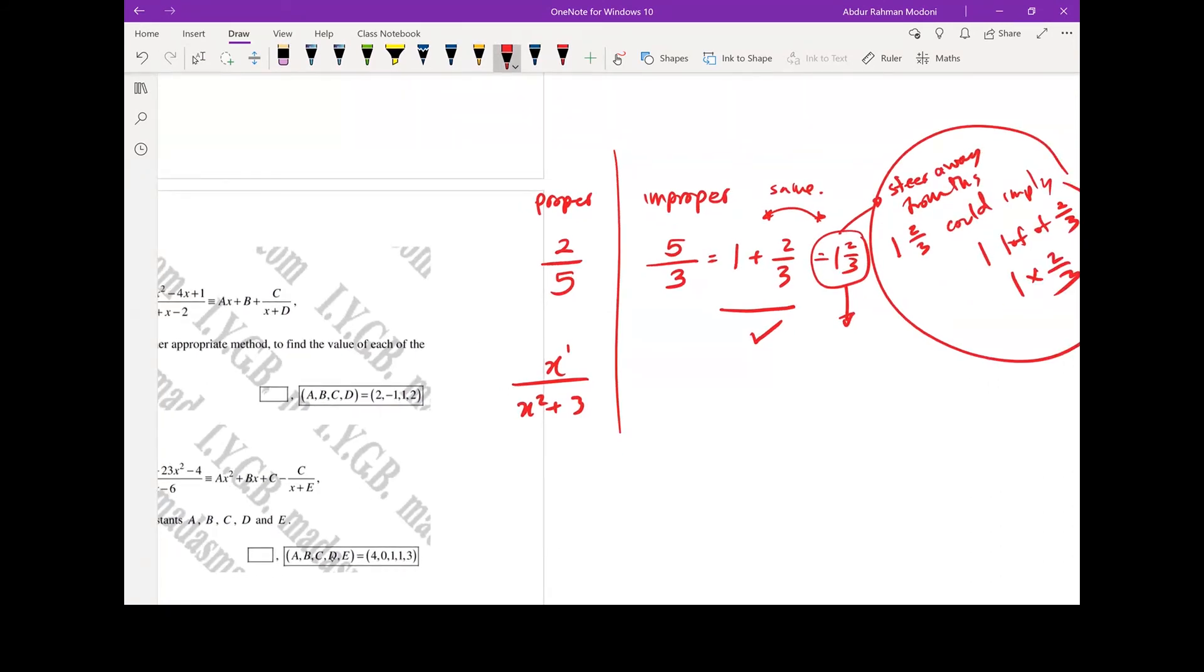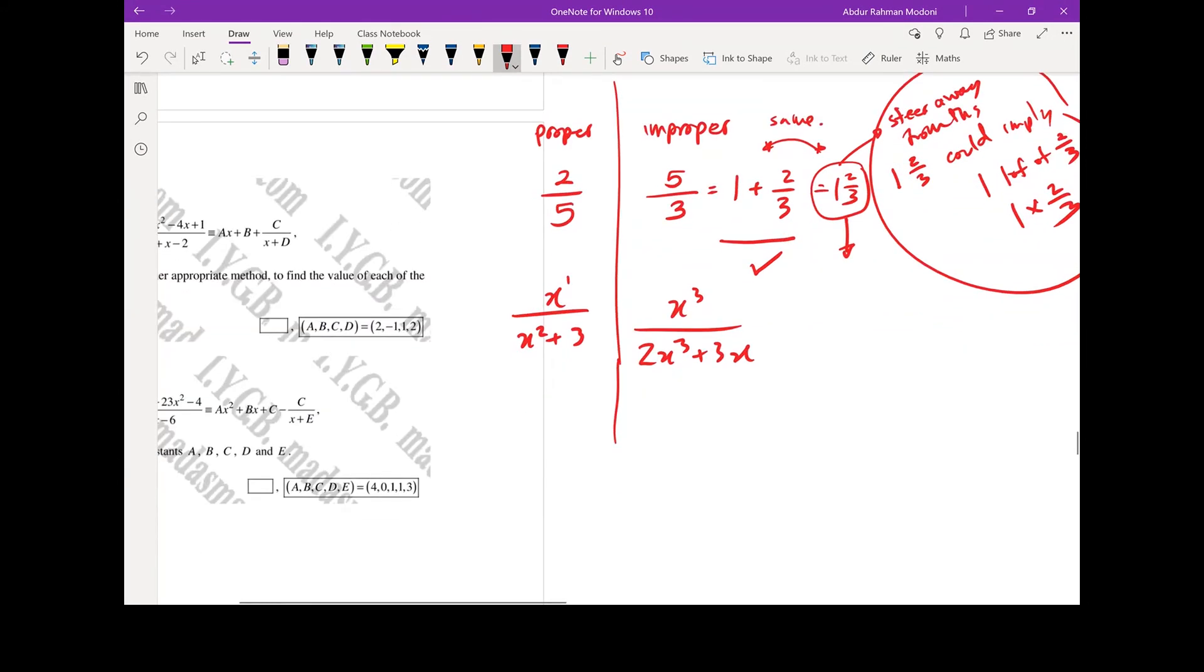Improper would be classed as anything where you've got either the same order on the numerator as denominator, or the numerator is higher - same or higher. So if you had something where it's written in this form, x cubed over 2x cubed plus 3x, the fact that you've got x cubed on the numerator and denominator would mean that this is an improper algebraic fraction. So it can actually be written in the form of this mixed number form that we have: something plus something, which we're going to take a look at in a moment. Also, when the power on the numerator is greater, it's obviously improper.